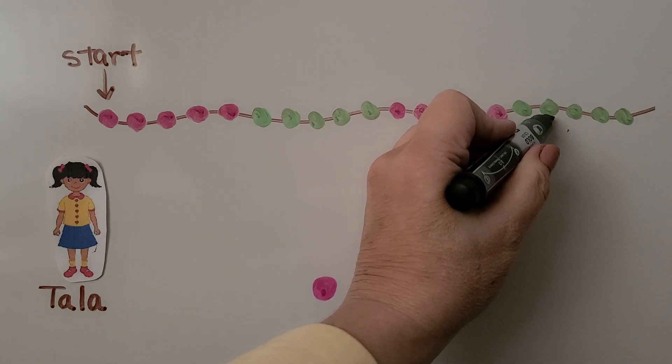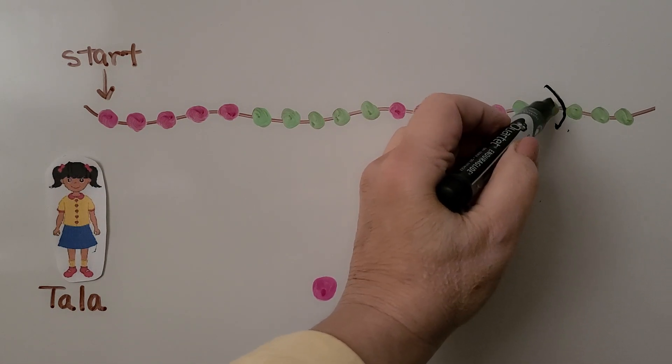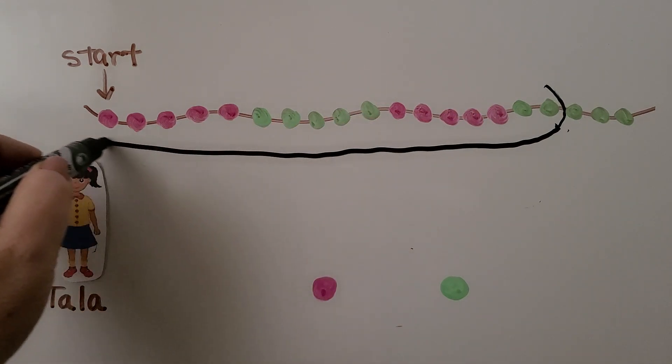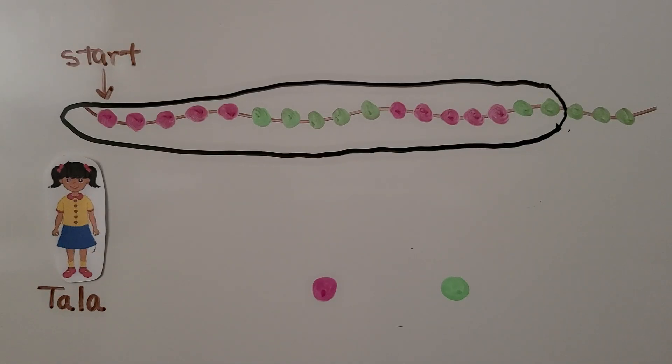So this green one is number 17. That's where we're going to stop. That's going to be the last bead in our circle. We've circled 17 beads.